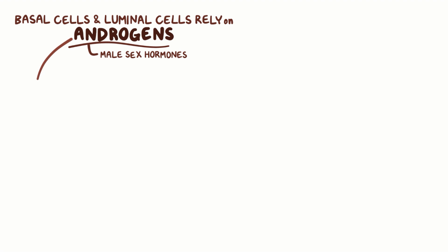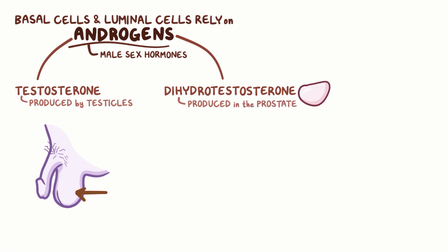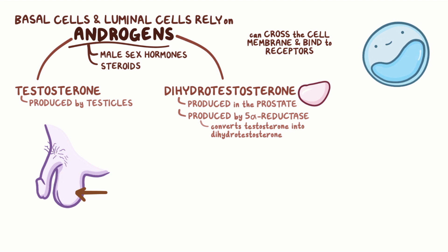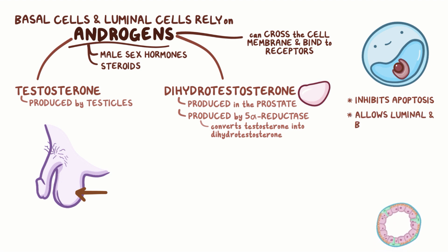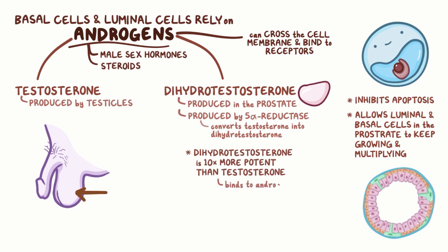The basal cells and luminal cells of the prostate rely on stimulation from the androgens, or male sex hormones, for survival. The androgens include testosterone, which is produced by the testicles, and dihydrotestosterone, which is produced in the prostate itself. This androgen is produced by the prostatic enzyme 5-alpha reductase, which converts testosterone into the more potent dihydrotestosterone. Since androgens are steroids, they can cross the cell membrane and bind to androgen receptors within the cell's nucleus. This inhibits apoptosis, or programmed cell death, allowing luminal and basal cells in the prostate to keep growing and multiplying. Dihydrotestosterone is 10 times more potent than testosterone because it can bind to androgen receptors much longer.